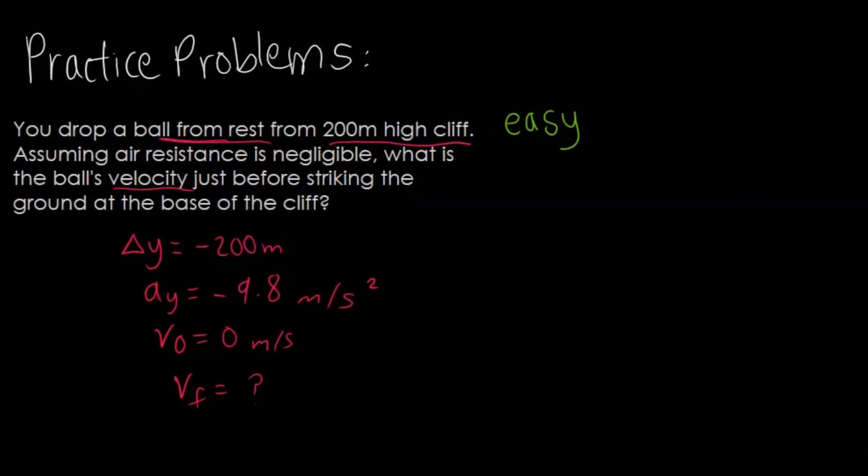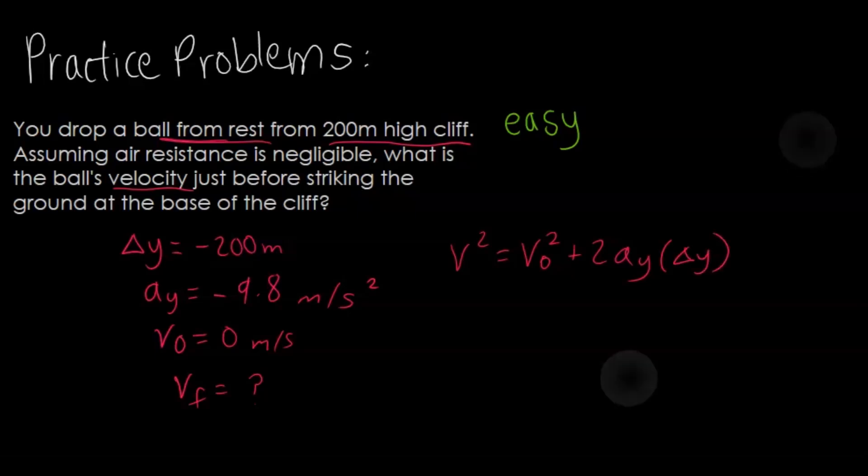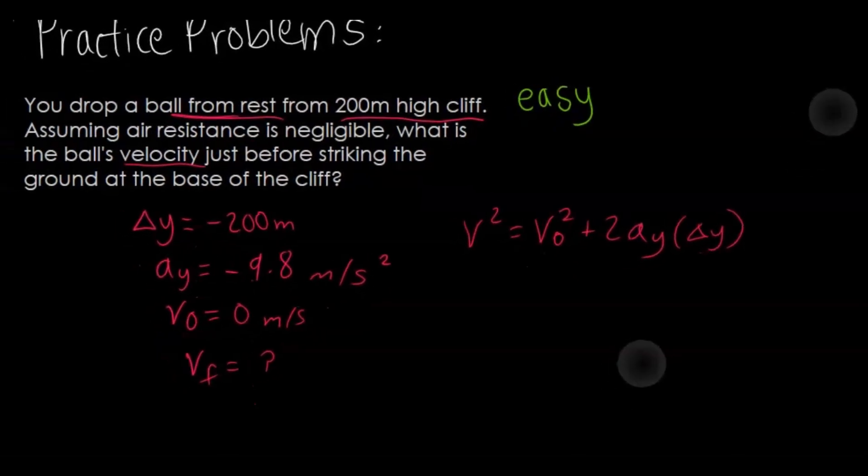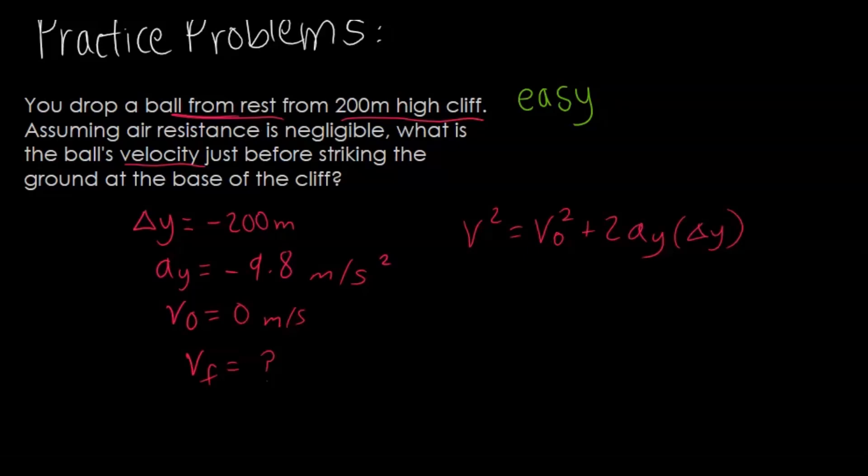That equation is going to be velocity squared: final velocity squared equals initial velocity squared plus two times the acceleration in the y direction times our displacement, or just y. So v² = v₀² + 2ay(Δy). Now let's just plug in our numbers.